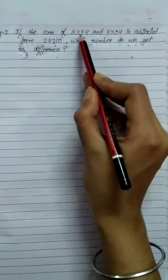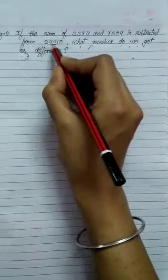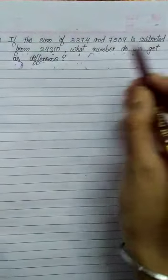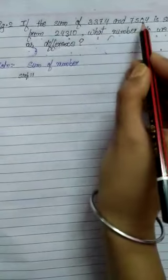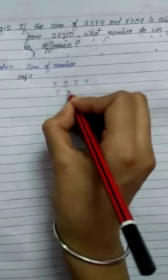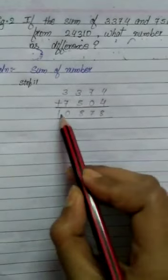Now see one more example. If the sum of 3,374 and 7,504 is subtracted from 24,310, what number do we get as the difference? Means: when we add these two numbers and get the sum, we subtract that from 24,310 to find the difference. So the first step is the sum of numbers — we add 3,374 and 7,504. By adding these two numbers we get 10,878.